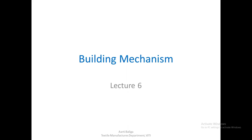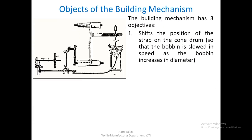Today we shall see the building mechanism. Let us first look at the objects of the building mechanism. It has three objects: first, it shifts the position of the strap on the kundram so that the bobbin is slowed down as the bobbin increases in diameter. As the bobbin diameter increases, the bobbin has to be slowed down, so we need to shift the position of the strap on the kundram.